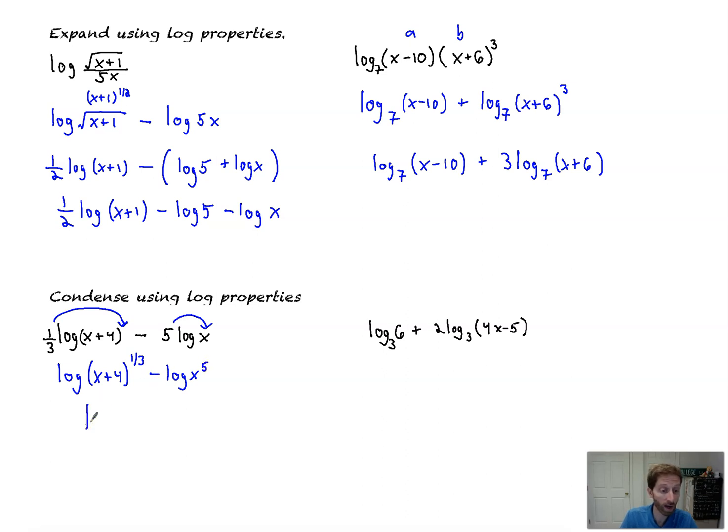Super fast. Here we go. Log base 3 of 6. Nothing I can do there, but I could put the 2 up here. So I've got log base 3 of 6 plus log base 3 of 4x minus 5 squared. Now, since I've got the addition of these two logs of the same base, I can multiply the arguments. 6 and 4x minus 5 squared are the arguments of the log. 6 times 4x minus 5 squared, and that's your final answer.